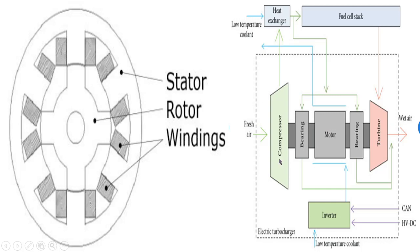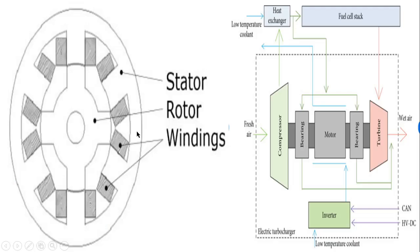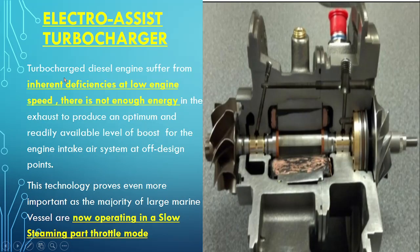Now looking at the construction, it consists of a normal stator-rotor arrangement. In the diagram you can see the compressor, turbine, bearing, and the high-speed permanent magnet motor. For a smaller electro assist turbocharger, here is the magnet or armature, here is the compressor wheel, and here is the turbine wheel.